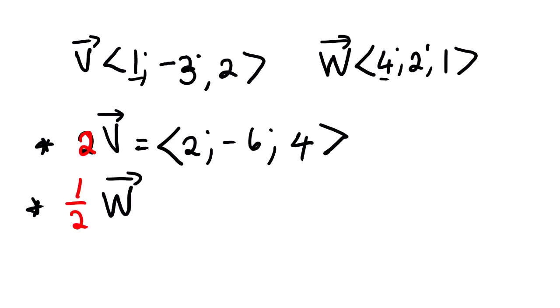The same applies to one-half multiplied by vector w. We are going to multiply each and every coordinate by one-half. So four multiplied by one-half is two, two multiplied by one-half is one, and one multiplied by one-half is one-half.